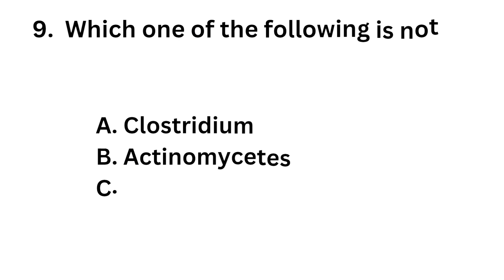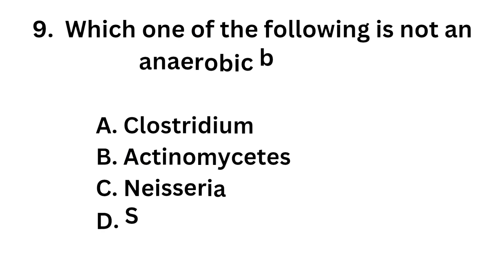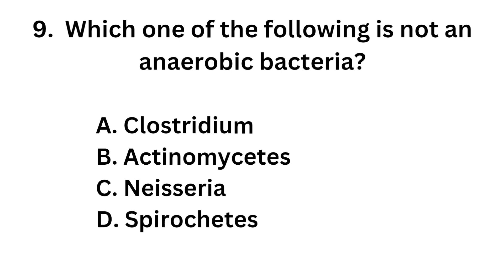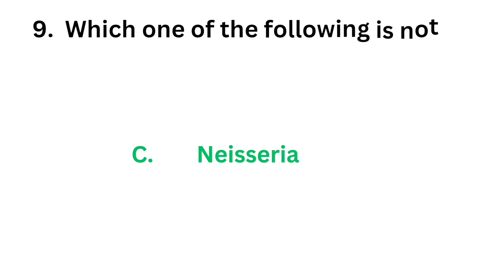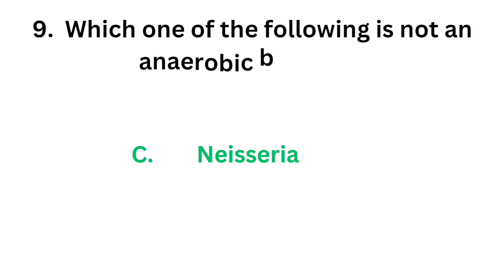Question number 9: Which of the following is not an anaerobic bacteria? Option A: Clostridium. Option B: Actinomyces. Option C: Neisseria. Option D: Spirogenes. The correct answer is Option C, Neisseria. Neisseria is an aerobic bacteria.